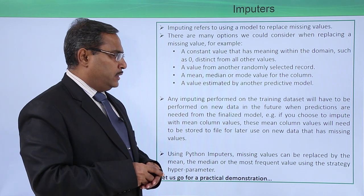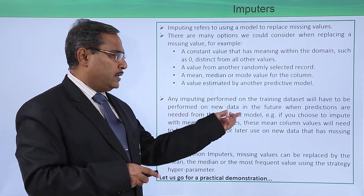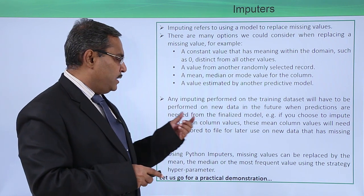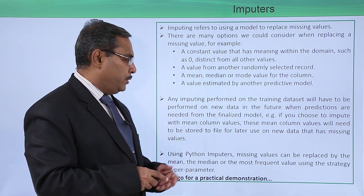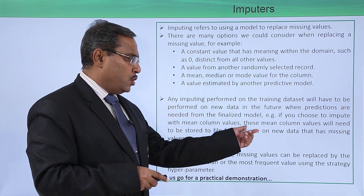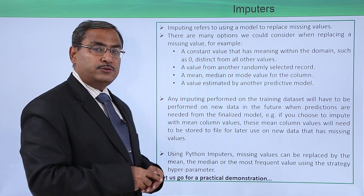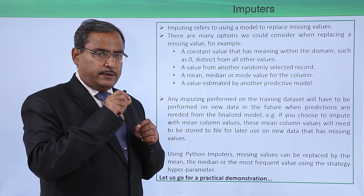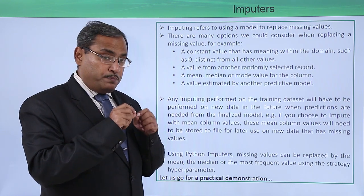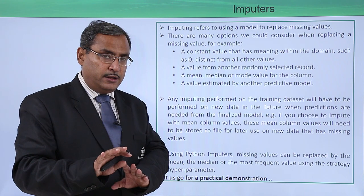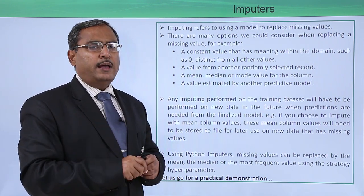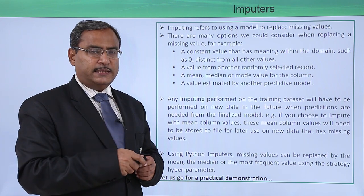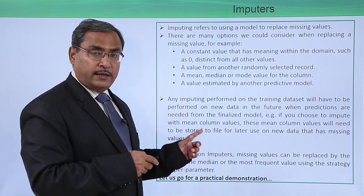Any imputing performed on the training dataset will have to be performed on new data in the future when predictions are needed from the finalized model. For example, if you choose to impute with minimum column values, those min column values will need to be stored to a file for later use on new data that has missing values. Those min values for respective columns must be saved so that when new tuples arrive with missing values, we can pick up the respective min value from the file to replace them.